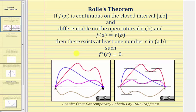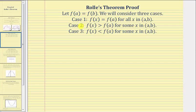Now let's prove Rolle's Theorem. We'll first let f of a equal f of b, and we'll consider three cases. Case one: we'll let f of x equal f of a for all x in the open interval from a to b. Case two: we'll let f of x be greater than f of a for some x in the open interval from a to b. And finally, case three: we'll let f of x be less than f of a for some x in the open interval from a to b.